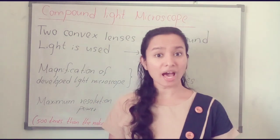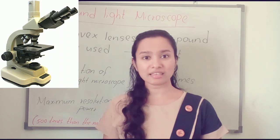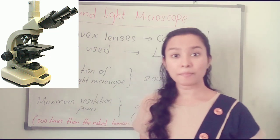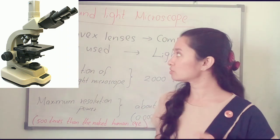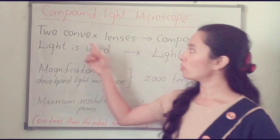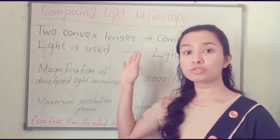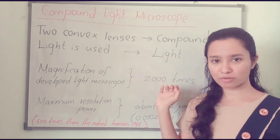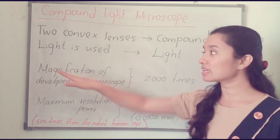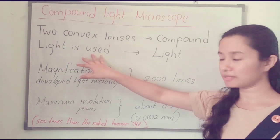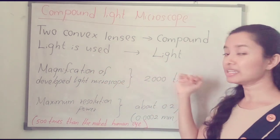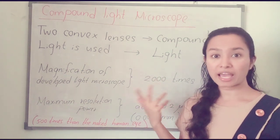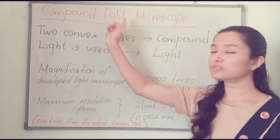Compound light microscope — have you seen this? In your laboratory, you can see the compound light microscope. This microscope is made by two convex lenses. That's why we are calling it a compound microscope. And here, we are using light to see the specimen, so we also call it a light microscope. It has three names: compound microscope, light microscope, and compound light microscope.